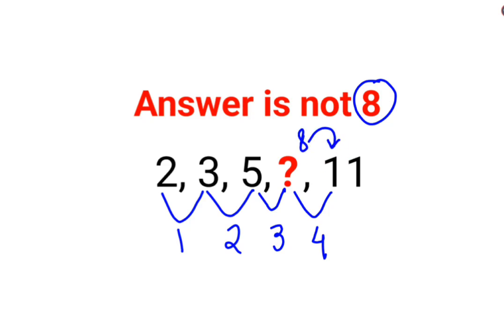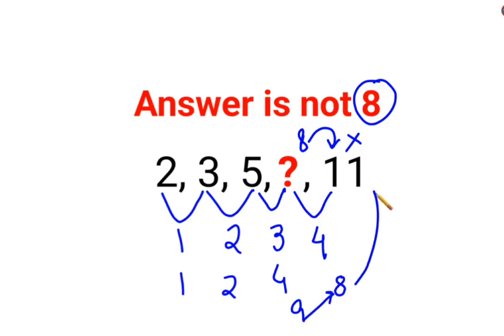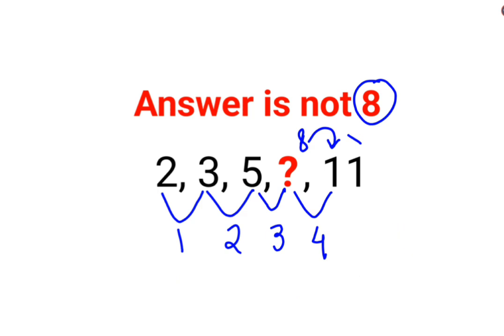But 8 plus 4 is not getting you 11. Similarly, either people thought that the difference is 1, 2 — maybe the difference is getting doubled, so it should be 4. So 5 plus 4 is 9. The next difference should have been 8, but 9 plus 8 is 17 — it is not even 11. So in both cases, the things were not working.